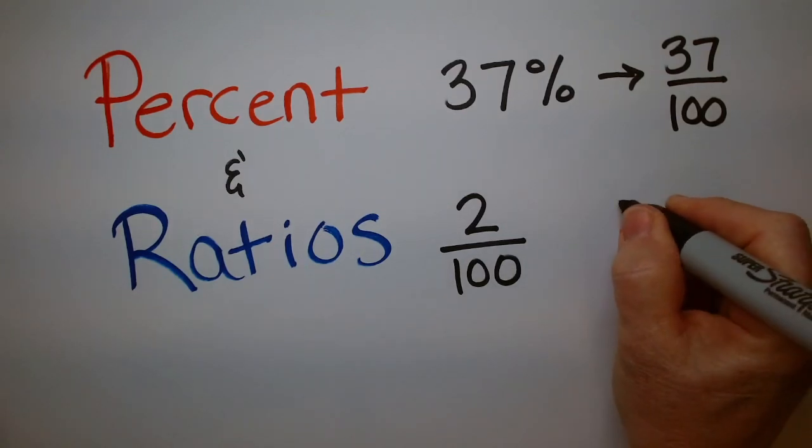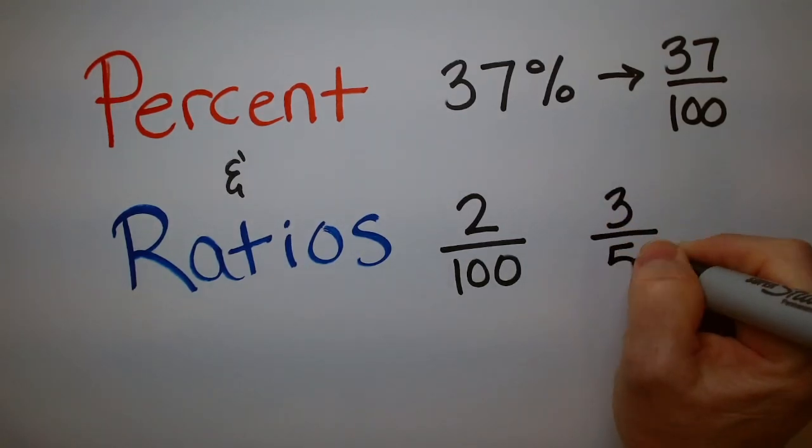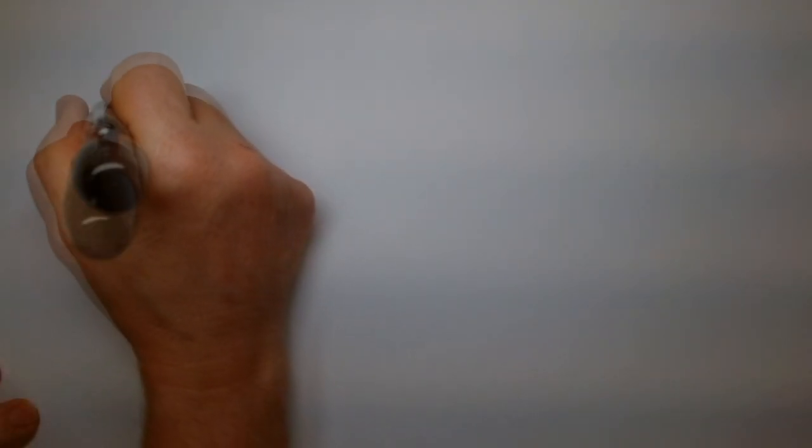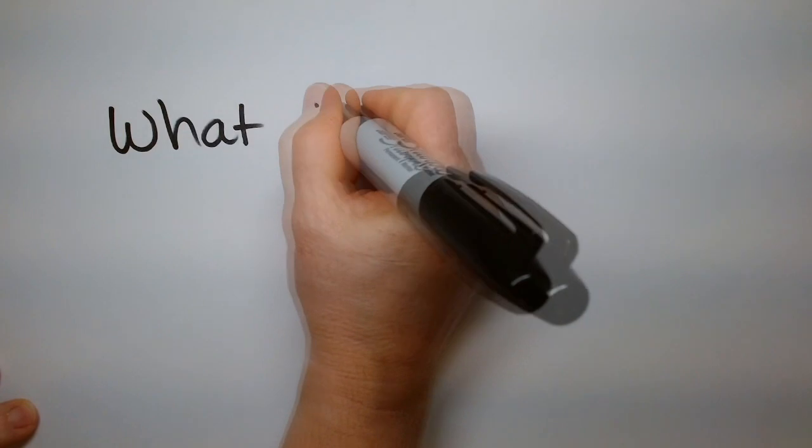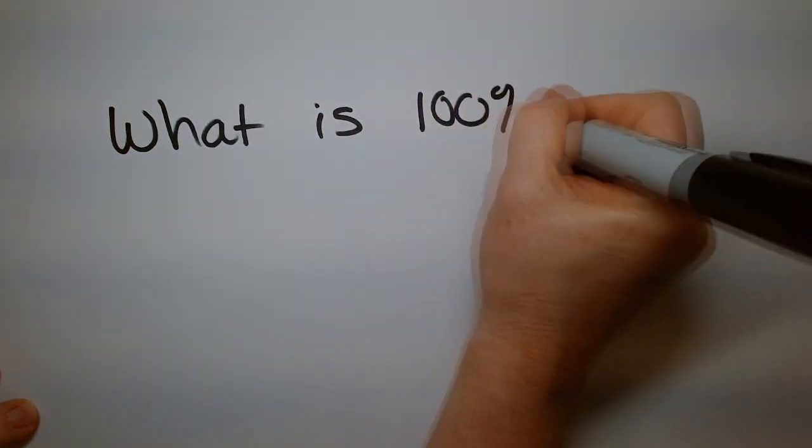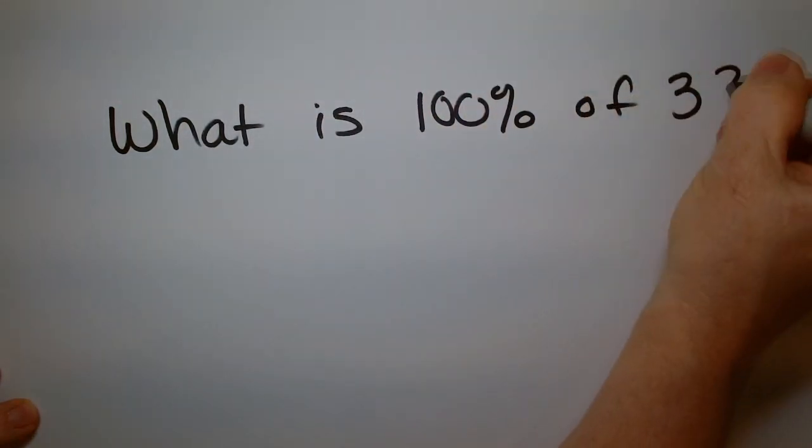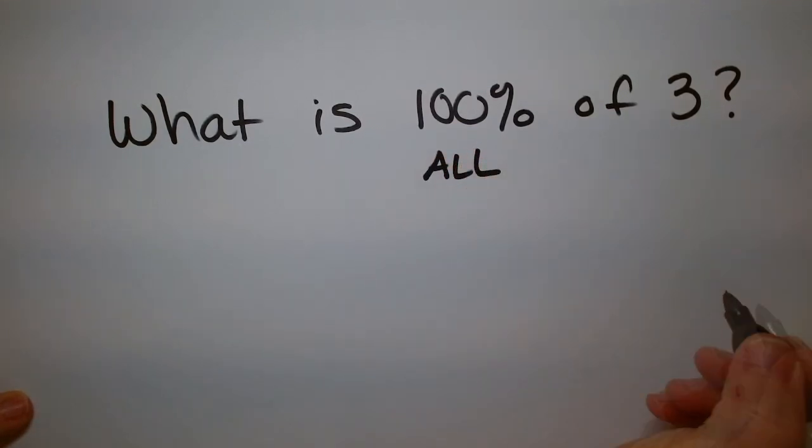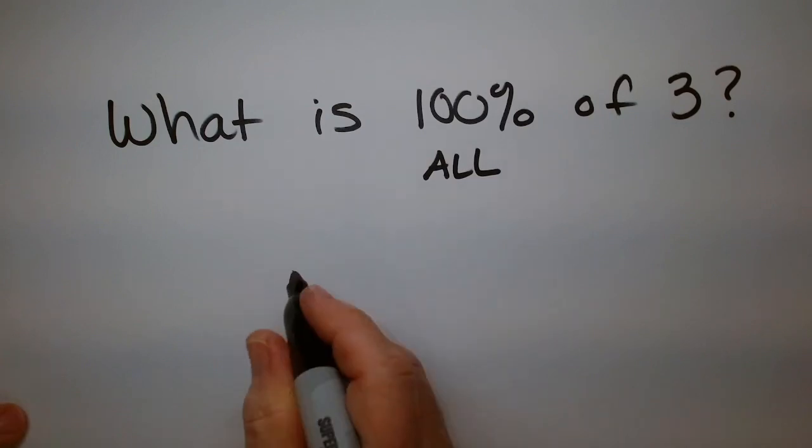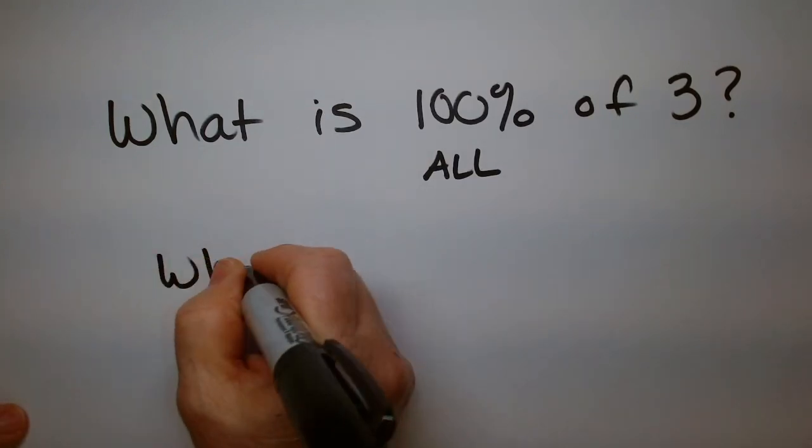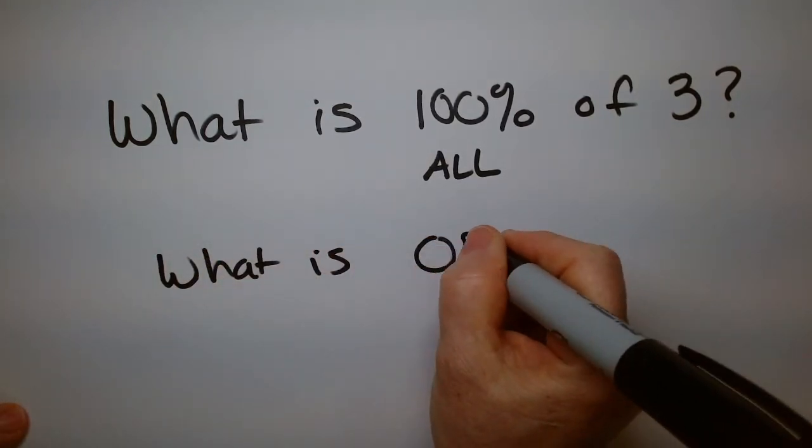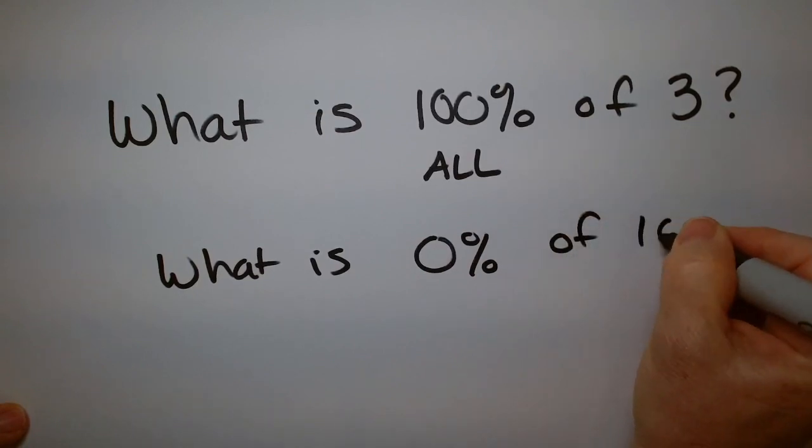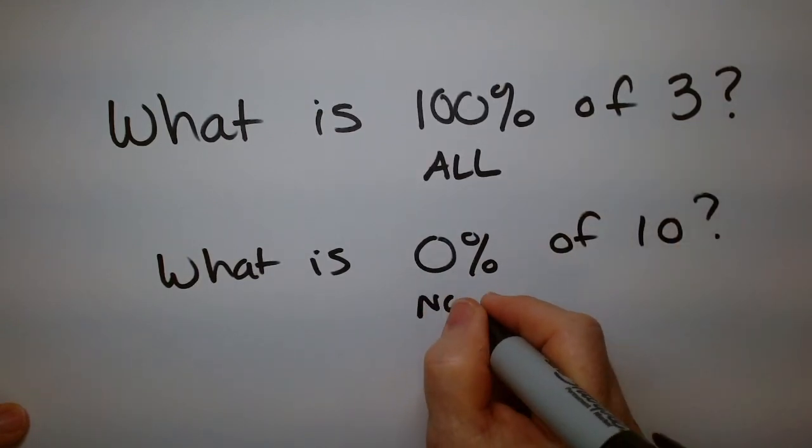If I asked you, what is 100% of three? 100% means you get all of it. So 100% of three is three. But if I said, what is 0% of 10, 0% means none.